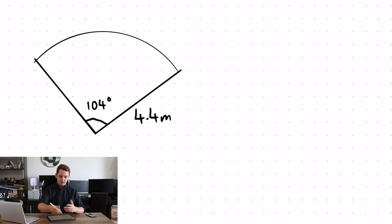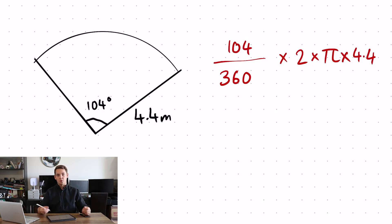Have you had a go now? If you have, this is what you should have done. You should have taken the angle 104, divided it by 360 and then multiplied it by 2 times π times 4.4, which is equal to 7.99 meters to 2 decimal places.